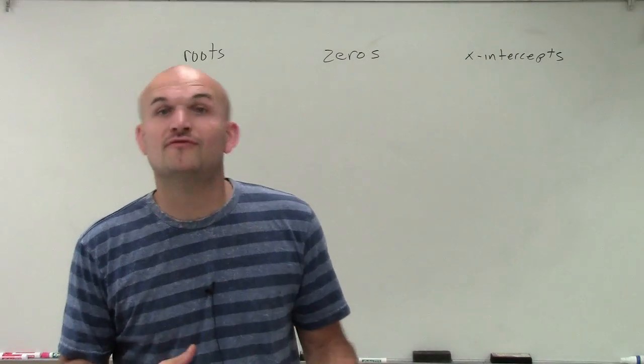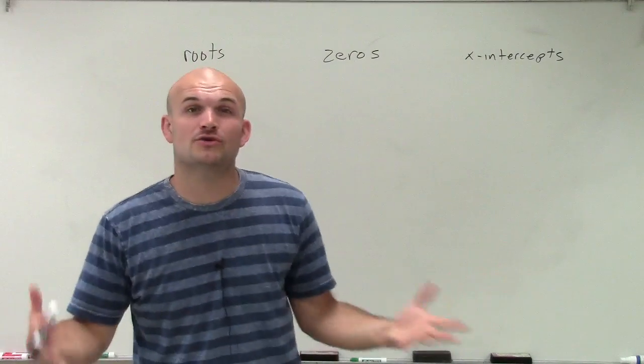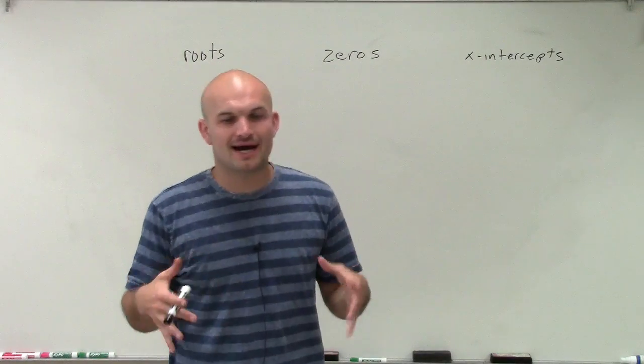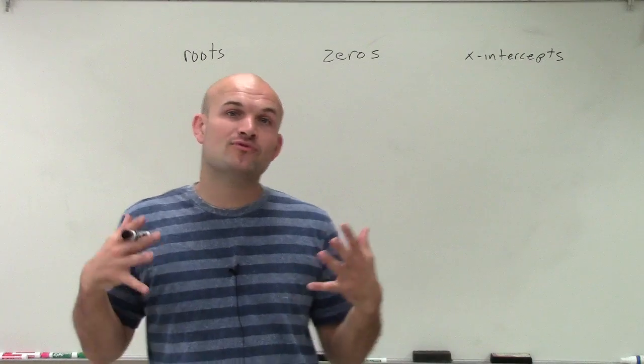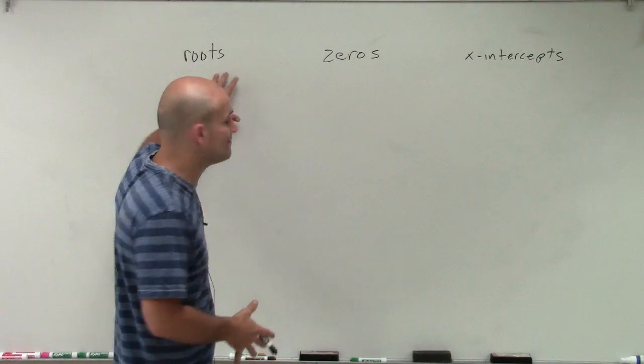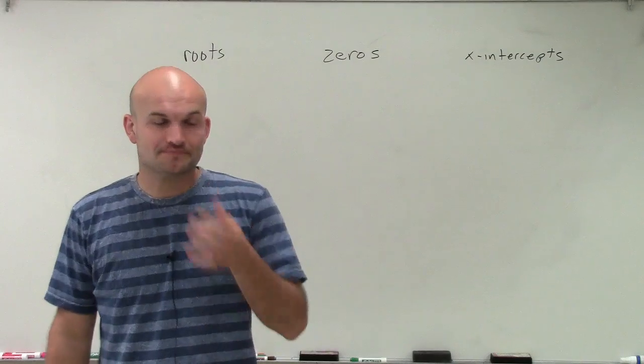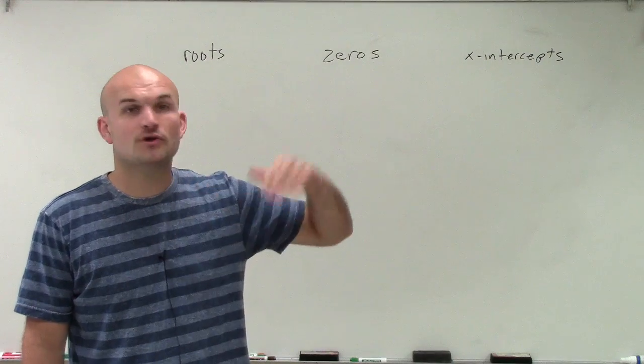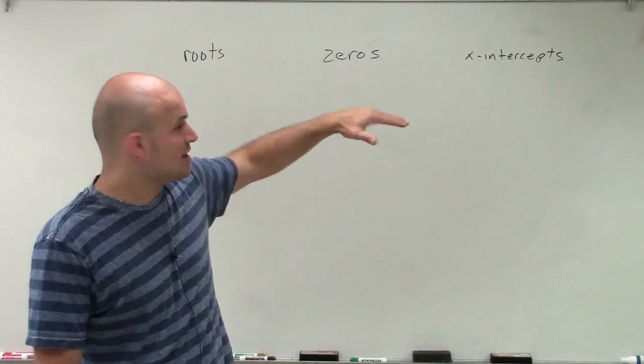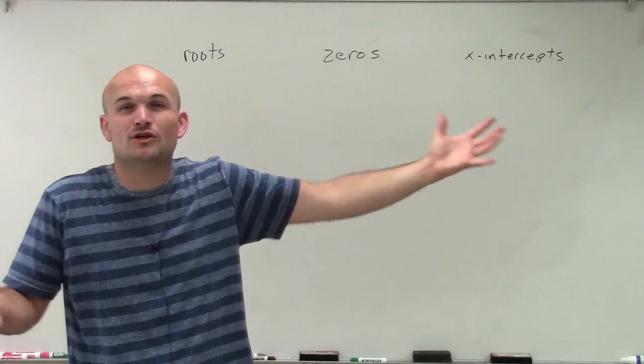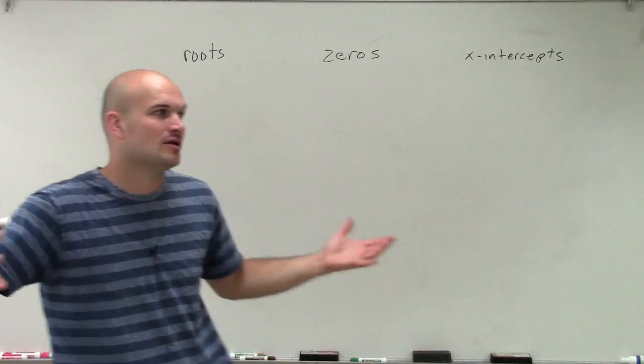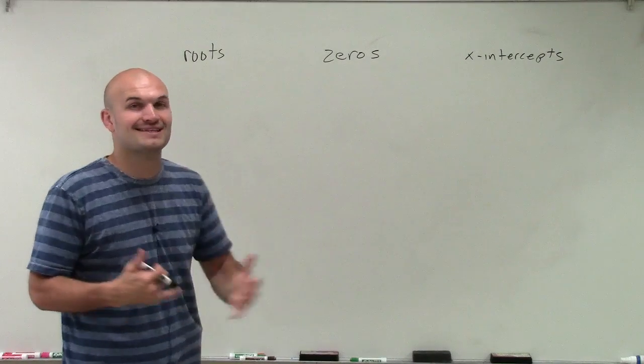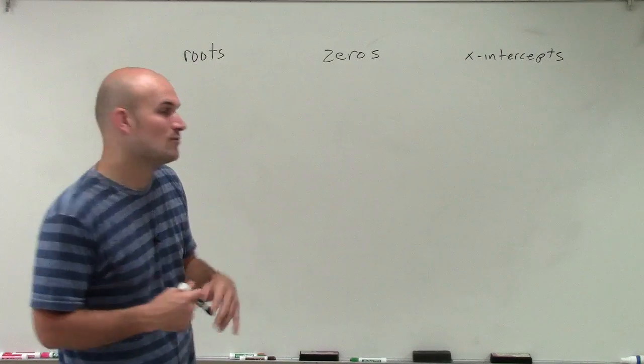So I went through this before and already talked about it, but I want to make sure we all understand. In my video series, I'm primarily going to be focusing on finding the roots. However, we are going to move up to finding the zeros, and we're also going to initially start with looking at the x-intercepts. You might say, why do they all represent the same thing? It all depends on what we're looking at.